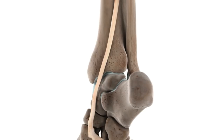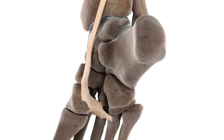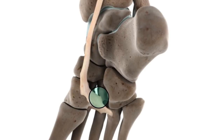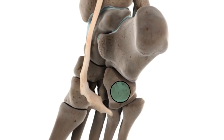From the medial malleolar sulcus, the tendon passes to the plantar aspect of the foot, where it attaches to several bones — initially the navicular and the medial cuneiform bones, before proceeding laterally to the intermediate and lateral cuneiform bones, as well as the second through fourth metatarsals. It may also give an attachment to the cuboid bone.